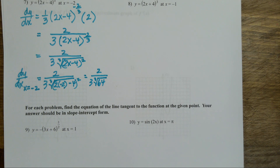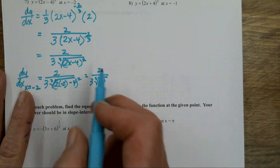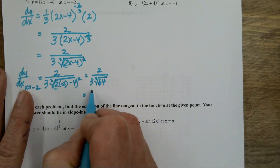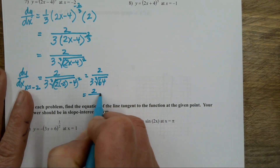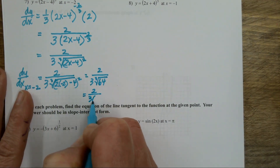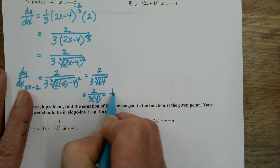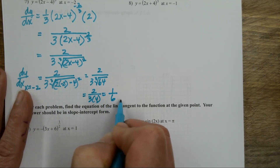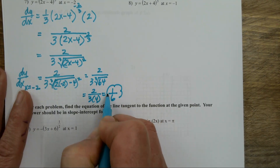What's the cube root of 64? Four — it's on my perfect cubes list. So this is two over three times four, or one sixth.